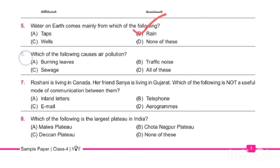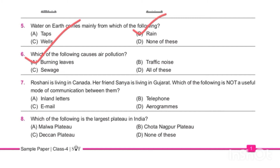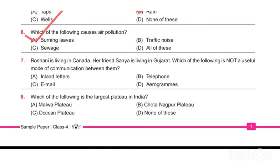Our next question: which of the following causes air pollution? The answer is option number A, burning leaves. Burning leaves produces CO2, or carbon dioxide, which is an air pollutant. Option number B, traffic noise, is wrong because it causes noise pollution.